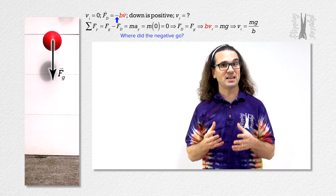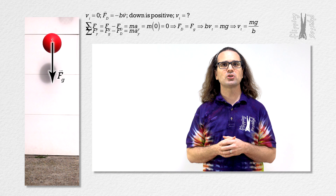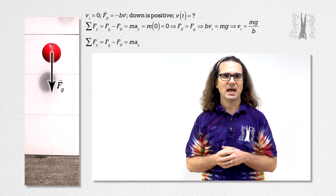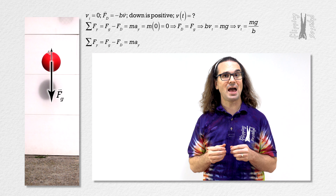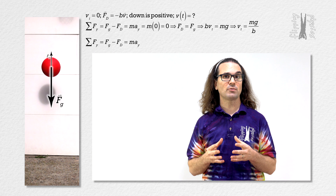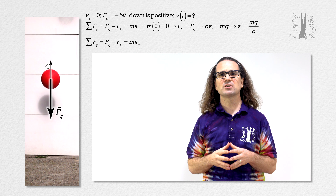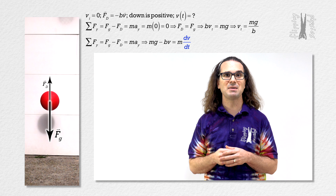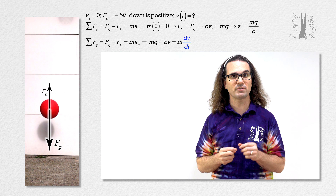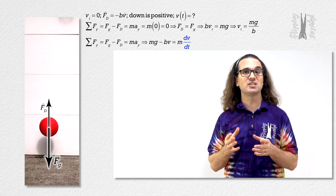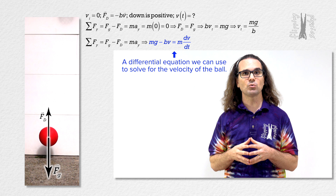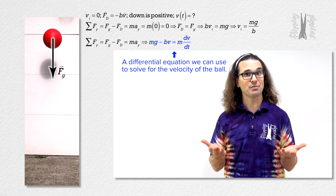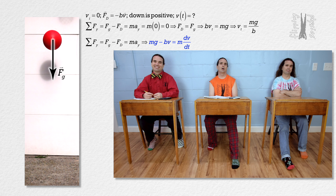Now we are going to use that same equation to determine the velocity of the ball as a function of time. However, rather than looking at what happens when the acceleration reaches zero, we are going to substitute the derivative of velocity with respect to time in for acceleration. Now we have a differential equation we can use to solve for velocity. We just need to do the math.